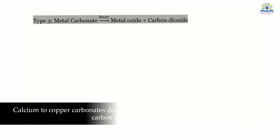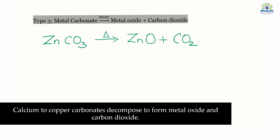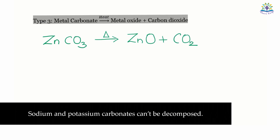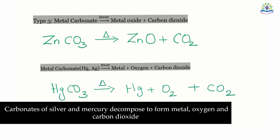When it comes to carbonates, metals in the reactivity series from calcium to copper decompose to form metal oxide and carbon dioxide. For example, zinc carbonate decomposes by heat to form zinc oxide and carbon dioxide. Sodium and potassium carbonates cannot be decomposed. Since the oxides of silver and mercury are not stable to heat, their carbonates decompose to form metal, oxygen, and carbon dioxide.